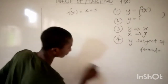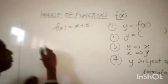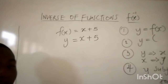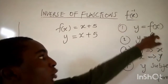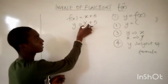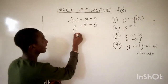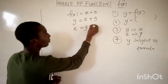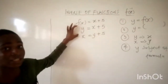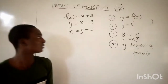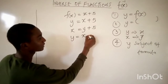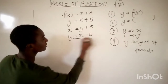Coming back to the first question, f(x) = x + 5: the first step is we replace f(x) with y, so we have y = x + 5. The next step is that anywhere we see y, we replace it with x, and anywhere we see x, we replace it with y. So we write x = y + 5. Making y the subject of formula gives y = x minus 5.